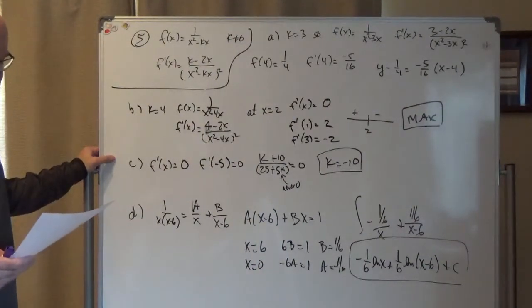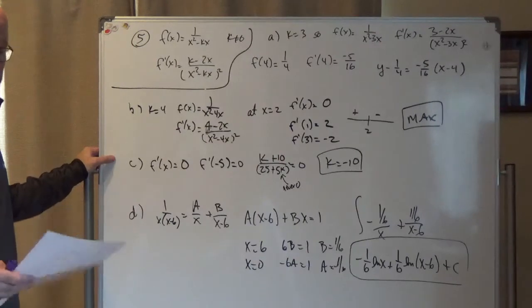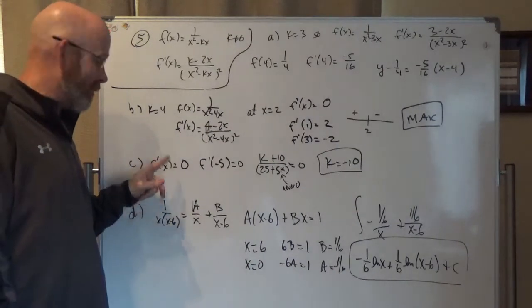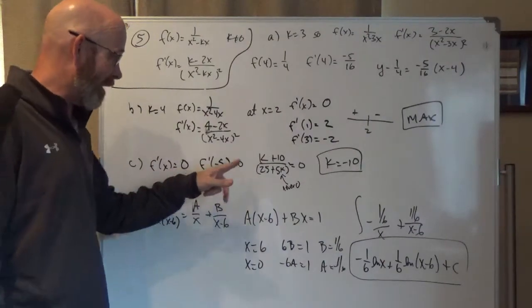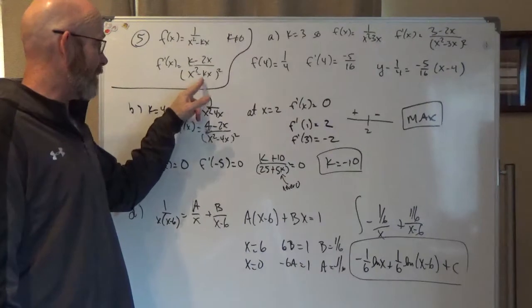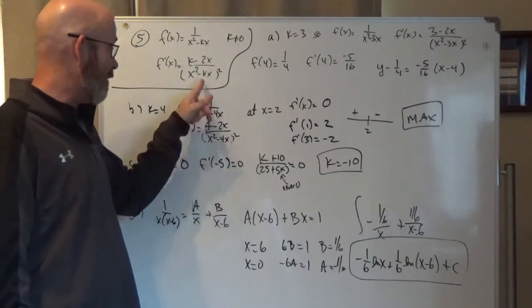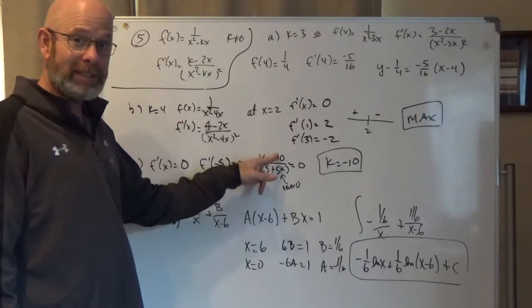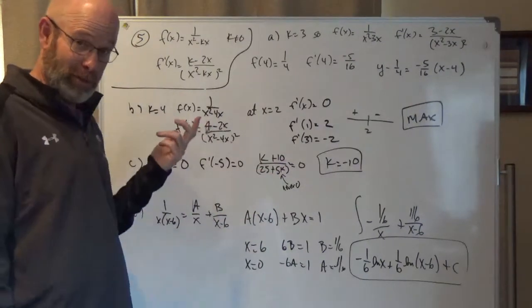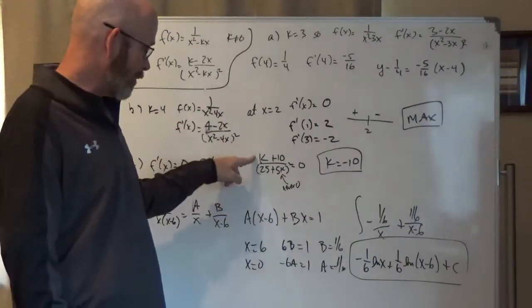Part C says find k. So there is a critical point at negative 5, which means if there's a critical point at negative 5, the derivative has got to be 0 at negative 5. So here's my derivative: k minus 2x over x squared minus kx. I plugged in the negative 5 and I got k plus 10 over 25 plus 5k. I'm looking for the critical points. Critical points when the derivative is 0, which is at negative 10.